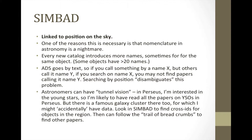SIMBAD, in contrast, is linked to position on the sky. The reason you need this is that nomenclature is a nightmare in astronomy. Every new catalog and survey introduces more names, and you end up with many names for the same object — some objects have more than 20 or even 40 names. ADS goes by text, so if you search by one name but somebody else wrote a paper using a completely different name, you may miss it. But if you use SIMBAD and search by position, it disambiguates this problem — removing the ambiguity by resolving different names for the same sky position.